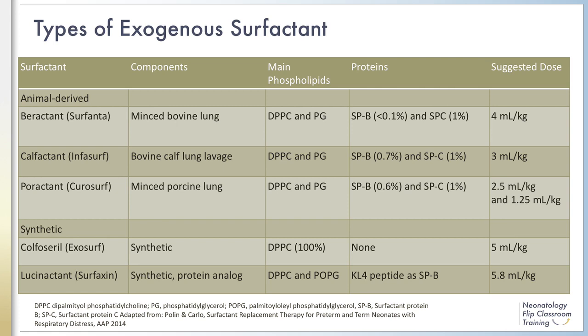Exogenous surfactant can be either synthetic or derived from animals. At present, surfactant can only be administered to an intubated infant. Animal-derived surfactants such as beractant, calfactant, and poractant are derived from bovine and porcine sources and all contain varying degrees of surfactant proteins B and C as well as phospholipids. Synthetic surfactants can be protein-free such as colfosceril, or contain proteins meant to mimic those found in lungs, as is the case with lucinactant. Both animal-derived and synthetic surfactants have been demonstrated to treat respiratory distress syndrome effectively.